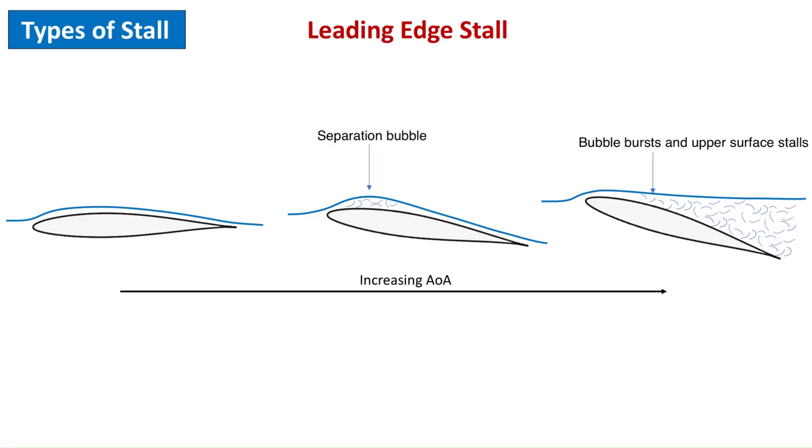Initially, the airflow reattaches behind this bubble, so it does not significantly affect the lift. However, once a critical angle of attack is reached, the bubble bursts, leading to sudden flow separation across the entire upper surface of the airfoil.